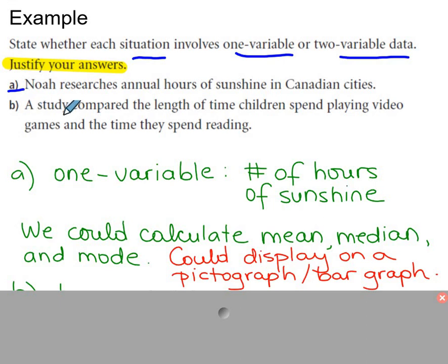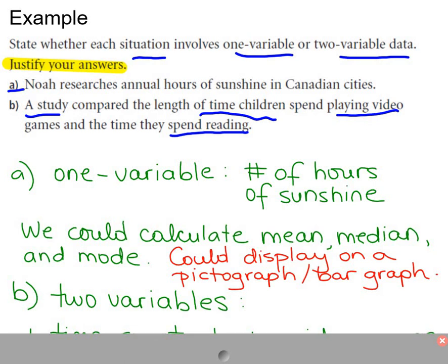Now what about the second one? A study compares the length of time children spend playing video games and the time they spend reading. So right away there are two variables in this case. We have the time of the children who are spending playing video games and the time they are spending reading. So there are two things that can be changing.